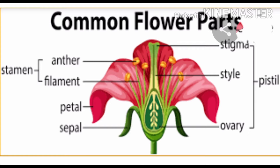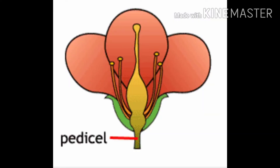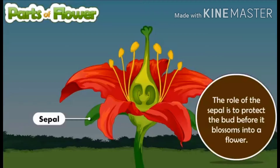A complete flower has all of them: sepals, petals, stamens and pistil. On the contrary, an incomplete flower is one that lacks one or more of these structures. A flower has many parts. Starting with the pedicel — it is a small stalk bearing an individual flower.